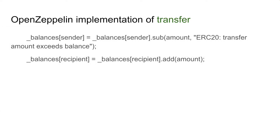Every ERC-20 contract has to implement the methods in that interface. If we look at an example from OpenZeppelin, their implementation of transfer looks very similar to the code that we've written earlier. For transferring money, we have the balance of the sender, and then we subtract the amount being transferred from that sender. Then we have the balance of the recipient, and we increment the balance of the recipient by that same amount.